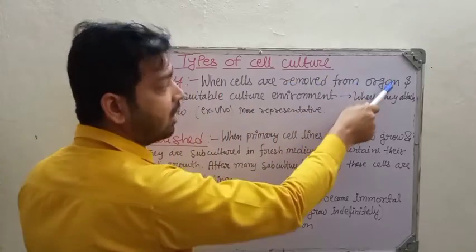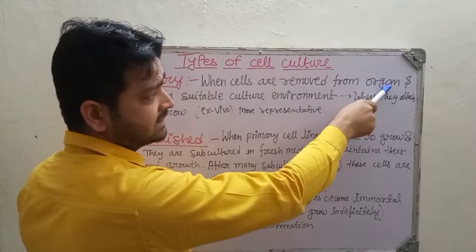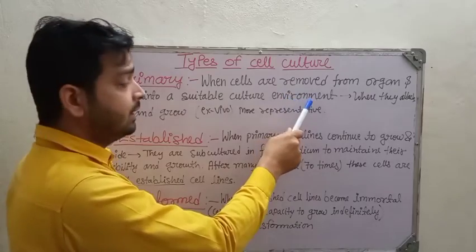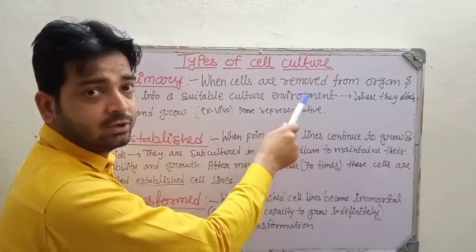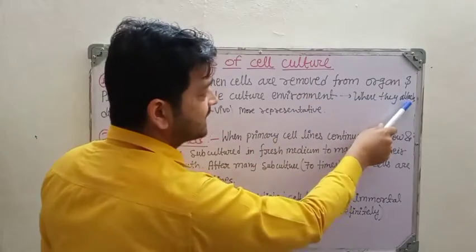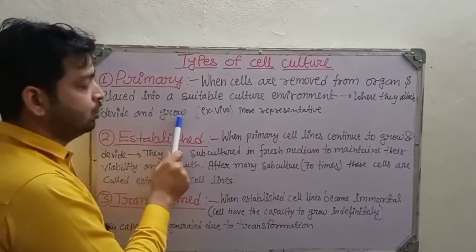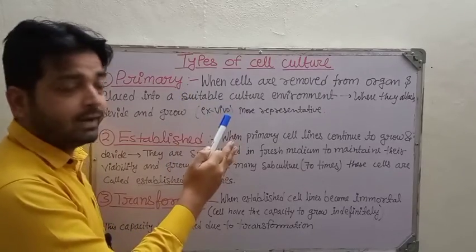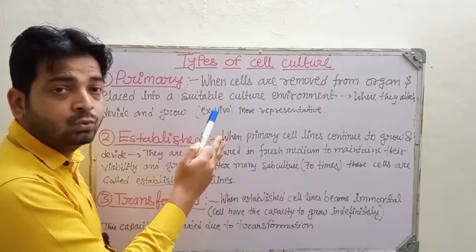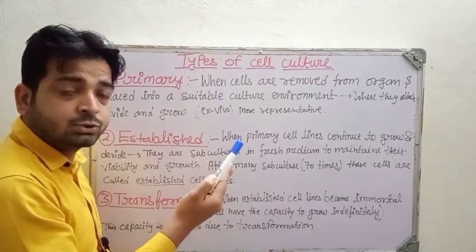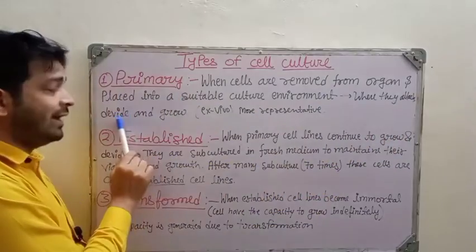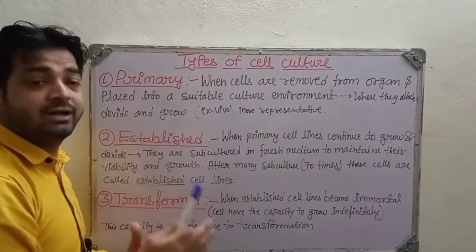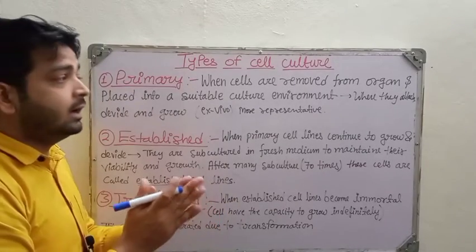When we talk about primary cell culture, cells are removed from an organ — it may be liver, digestive tract, rectus muscle, or any organ — and placed into a suitable culture medium with the required environment such as air and water. They then attach, divide, and grow. This is also known as in vitro, meaning outside of the animal body. After isolation from a particular organ, cells are placed into a suitable culture and medium so they attach, undergo cell division and multiplication, and grow. These are considered more representative because we can observe their growth patterns in vitro.